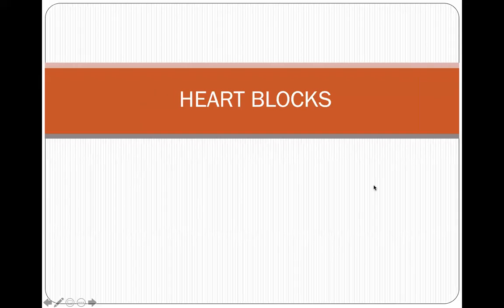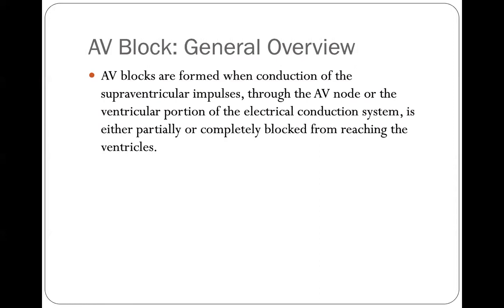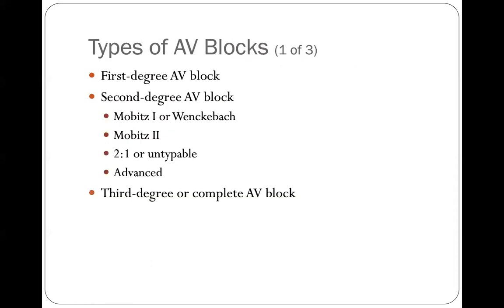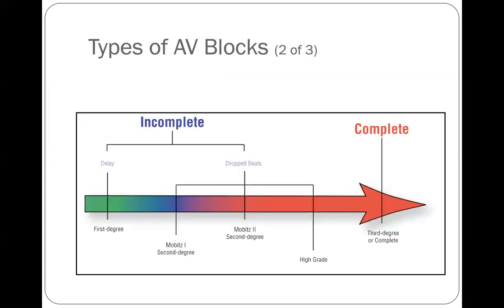When we talk about heart blocks, we've got differing degrees. They're formed when conduction within the AV node — coming from the atria — is somehow blocked before it gets to the ventricles. We have two main types and then some subtypes: first degree, second degree, and third degree heart blocks, also called first degree AV block, second degree (with two subtypes), and third degree or complete heart block.